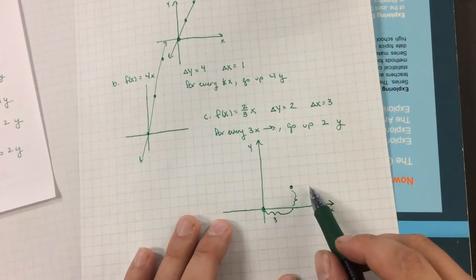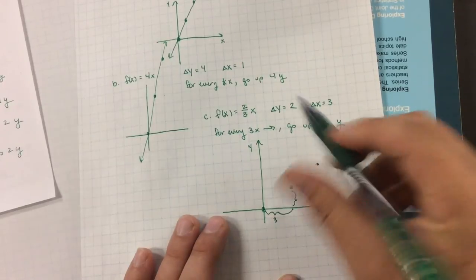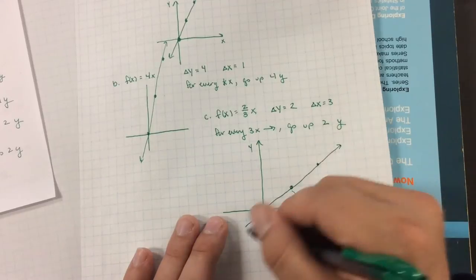Let's do it again. I'll go over 3, up 2. There's our point.